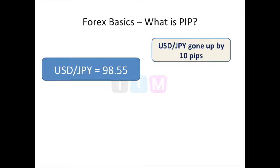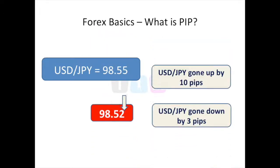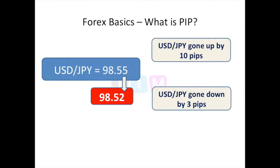For yen forex pairs, the pip represents the second decimal place. So if USD/JPY moves from 98.55 to 98.65, that is 10 pips up; from 98.55 to 98.52 is 3 pips down. Understanding pips is essential because it is one of the values needed to compute your potential profit or loss on a trade.